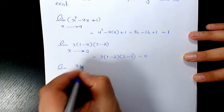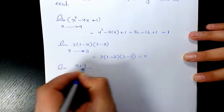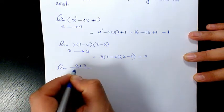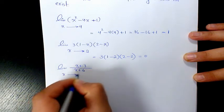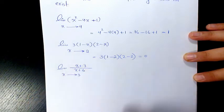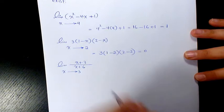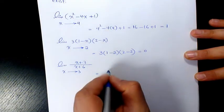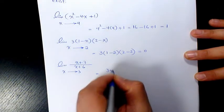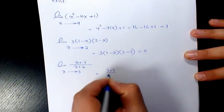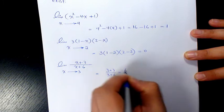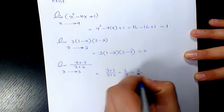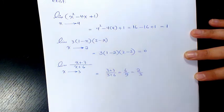Next one: the limit of (x plus 3) over (x plus 6) when x is approaching 3. The answer is going to be (3 plus 3) over (3 plus 6), which is 6 over 9, or 2 over 3.